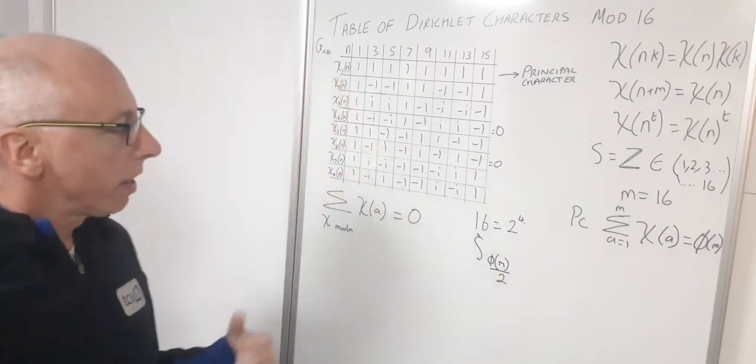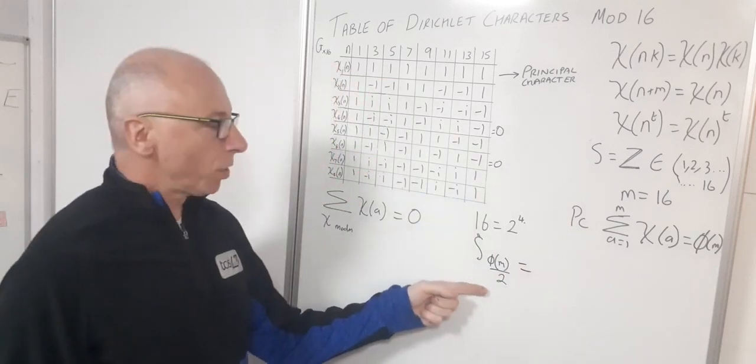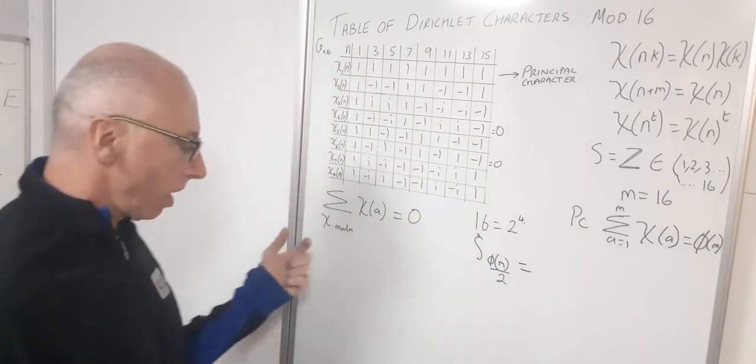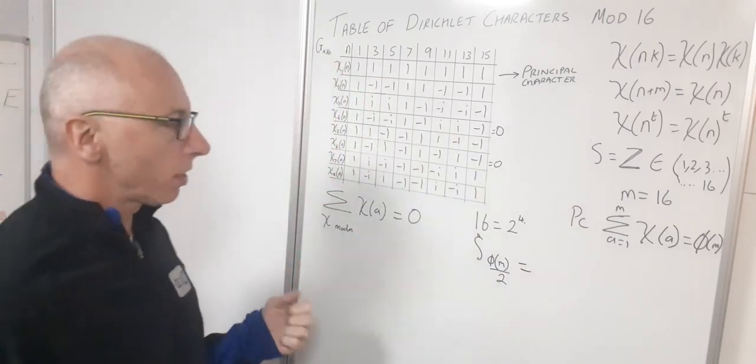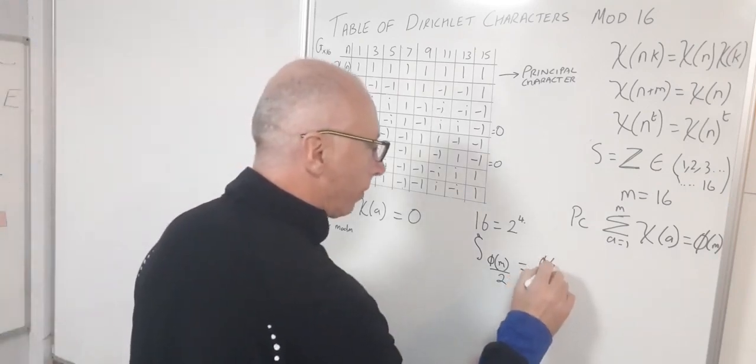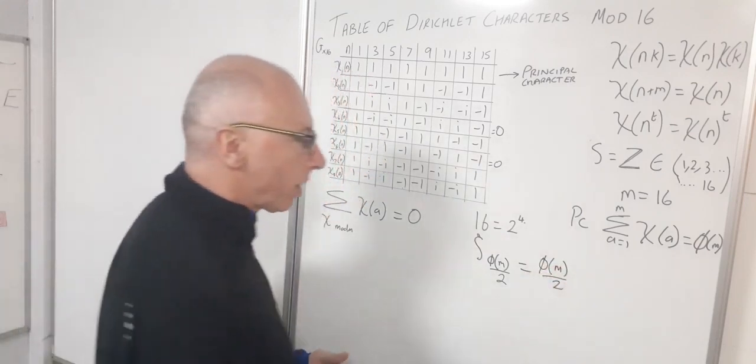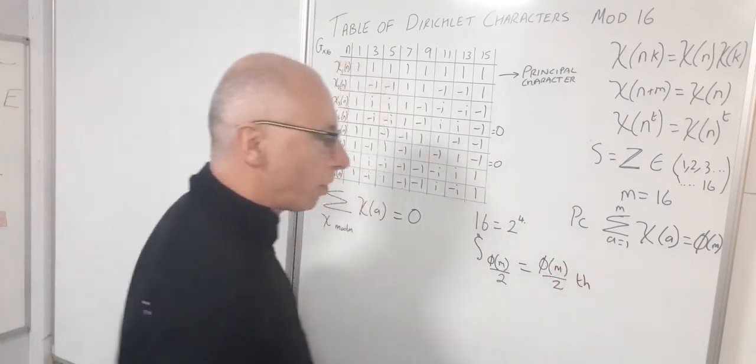We take our phi of our modulus, which in this case was 16, and we divide that by 2. That should give us our number of roots of unity. Now this is our primitive roots of unity, so these are the ones we're interested in. It's phi of m over 2, and whatever that is, that's our fourth roots of unity.